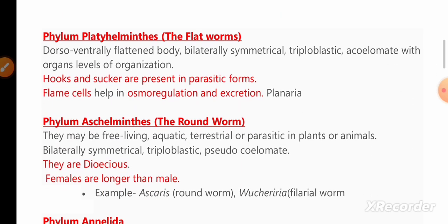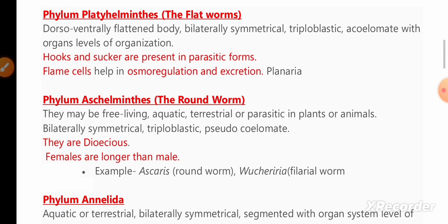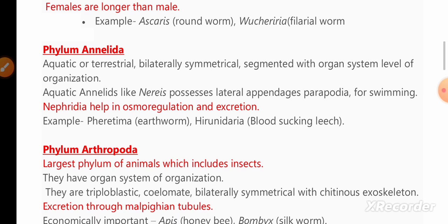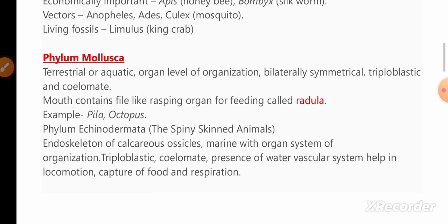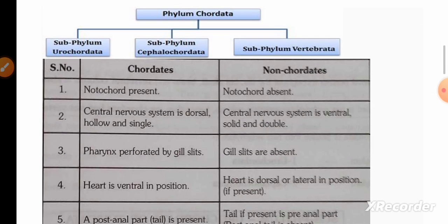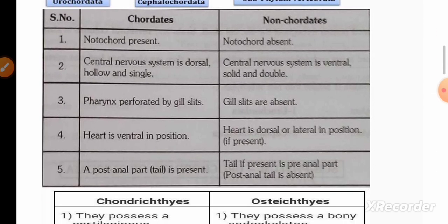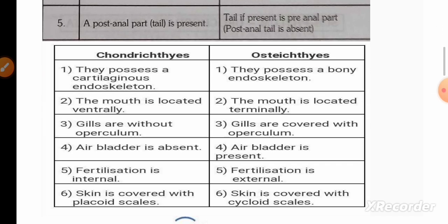In Phylum Ctenophora, remember the definition of bioluminescence — the property to emit light. Remember the characteristics of Platyhelminthes (flatworms) and flame cells. In Aschelminthes, flame cells are also very important. In Phylum Annelida, remember the characteristic features and nephridia. Phylum Arthropoda is the largest phylum of the animal kingdom — remember its characteristic features. In Phylum Mollusca, remember the radula, which is a rasping organ.